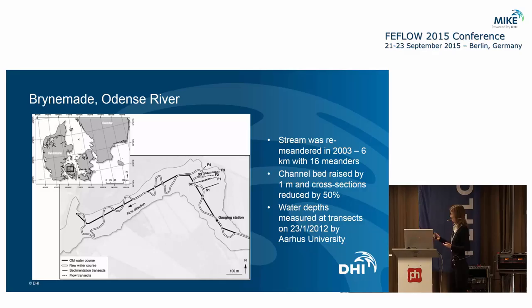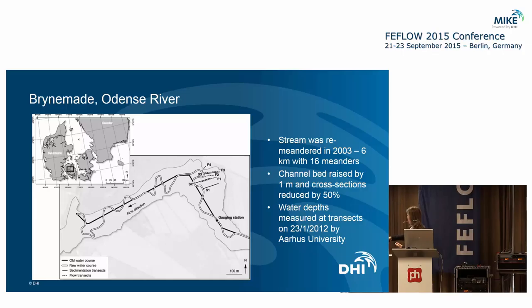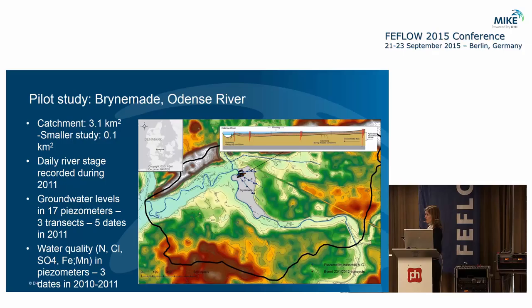This approach has been tested on a wetland located in Denmark, along one of the main rivers on Funen called Ønsø. Originally the stream had been straightened — shown as the black line — and then in 2003 it was re-meandered. The University of Aarhus took measurements of river stages during a medium flood in 2012, which we have for model validation. The channel bed was also raised at the same time and cross-sections were reduced by 50%.